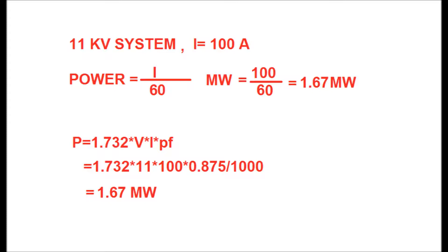We know that power P = √3 × V × I × cos φ, where cos φ is the power factor. Taking power factor as 0.875, you get P = 1.732 × 11 × 100 × 0.875 divided by 1000, which gives 1.67 megawatts.